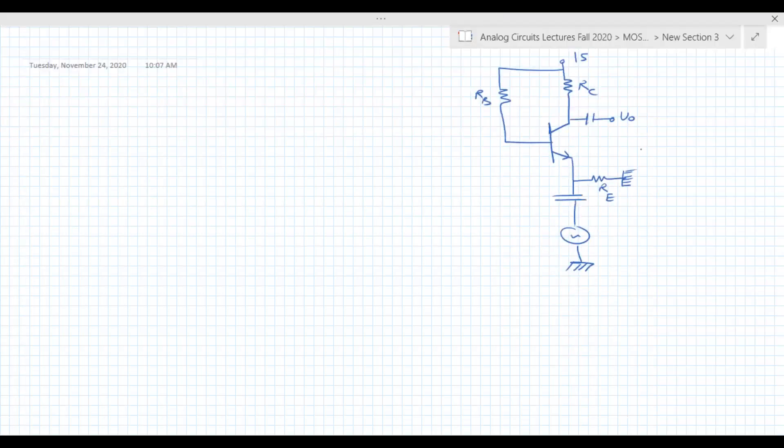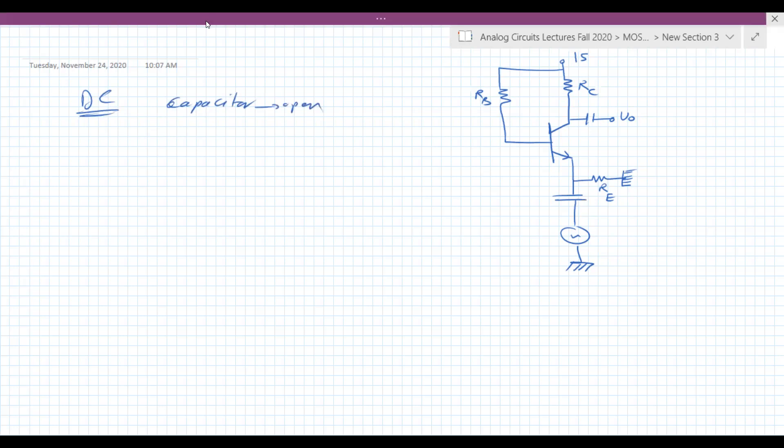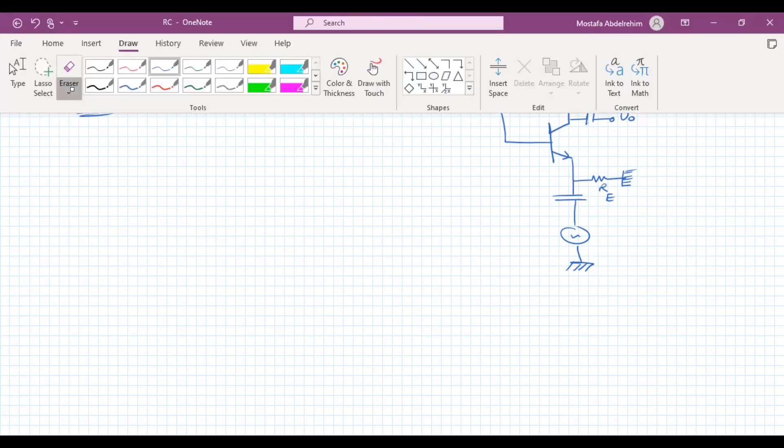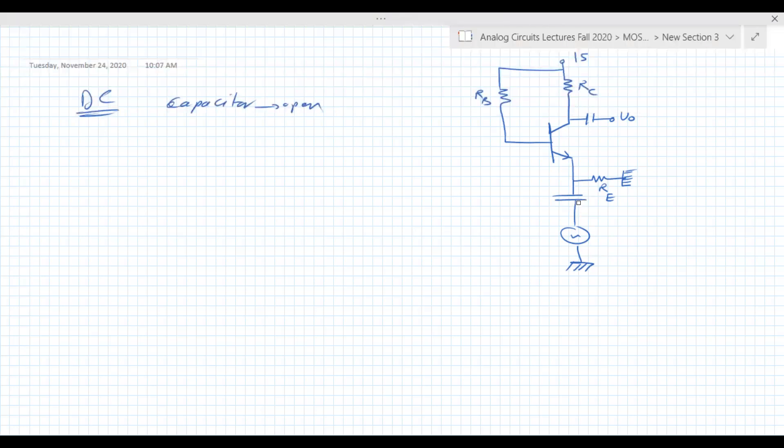Okay, so basically in the DC analysis, the capacitors would be open circuits. When you have an open circuit, you just remove the capacitor and what's behind it. So this guy would be removed, remove this also. This is the circuit now.